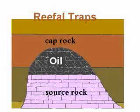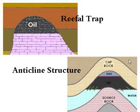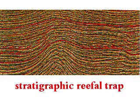Oil migrates into reefal traps from the source rock and flows to the top of the trap where it will be stopped by a cap rock. They look like an anticline, but they are not. Reefal traps are stratigraphic, meaning they were formed during the deposition of layers of dead animals.